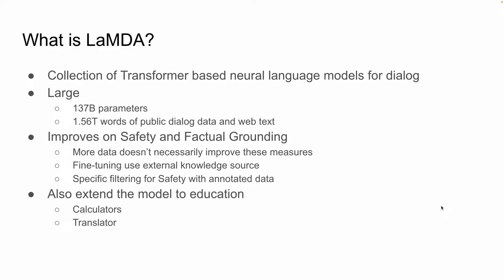So what is LaMDA? LaMDA is a collection of transformer-based neural language models for dialogue. It is really geared towards conversation between the model itself and human beings — you can think of this as a chatbot, or something closer to mimicking a phone conversation. This model is large: 137 billion parameters, trained on 1.56 trillion words from public dialogue data and web text.